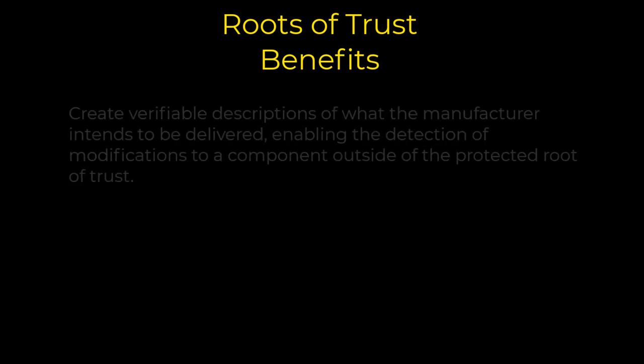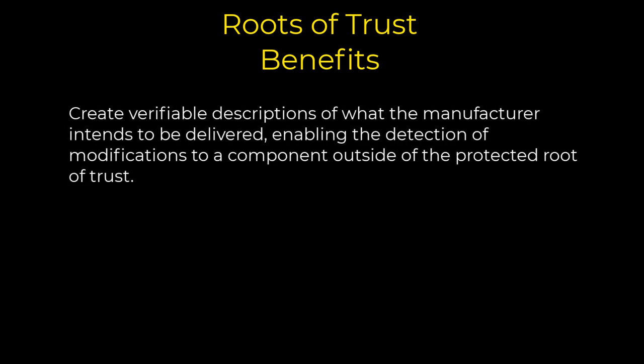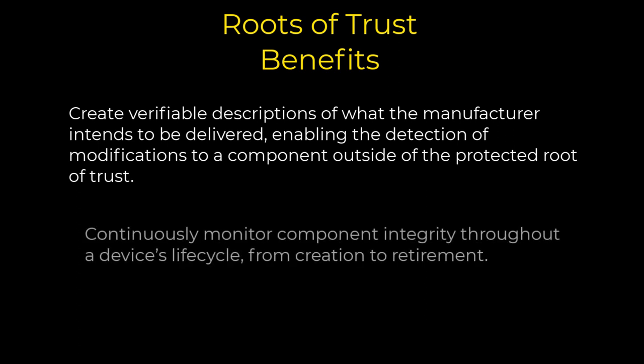By using routes of trust across all device and system components, vendors and recipients of their components can: first, create verifiable descriptions of what the manufacturer intends to be delivered, enabling the detection of modifications to a component outside of the protected route of trust; and second, continuously monitor component integrity throughout a device's lifecycle, from creation to retirement. Not all vendors provide a route of trust for verification, so customers across the supply chain should consider what is not protected and the relevant risk.